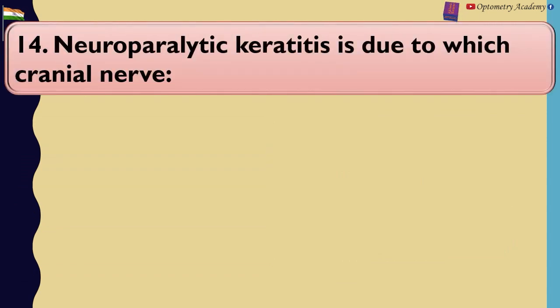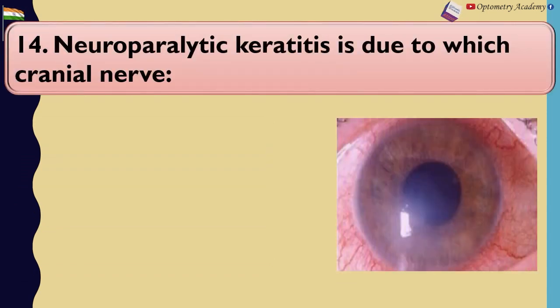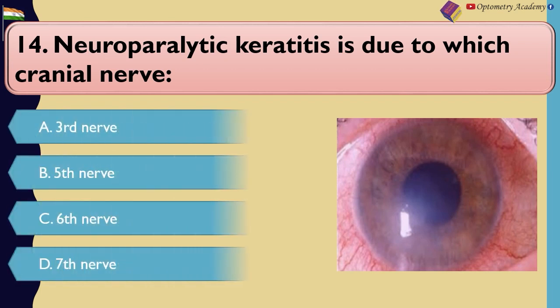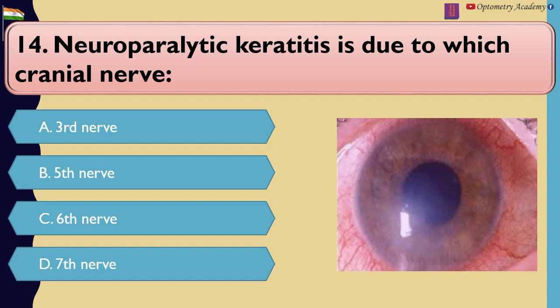Neuroparalytic keratitis is due to which cranial nerve? A. 3rd nerve. B. 5th nerve. C. 6th nerve. D. 7th nerve.